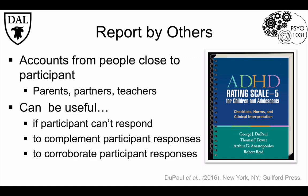Reports by others can also be used to corroborate a participant's response — to double-check that the information provided is accurate. In research on romantic relationships, partners are sometimes asked about each other, or shared experiences like interpersonal conflict, parenting, or drinking behavior.